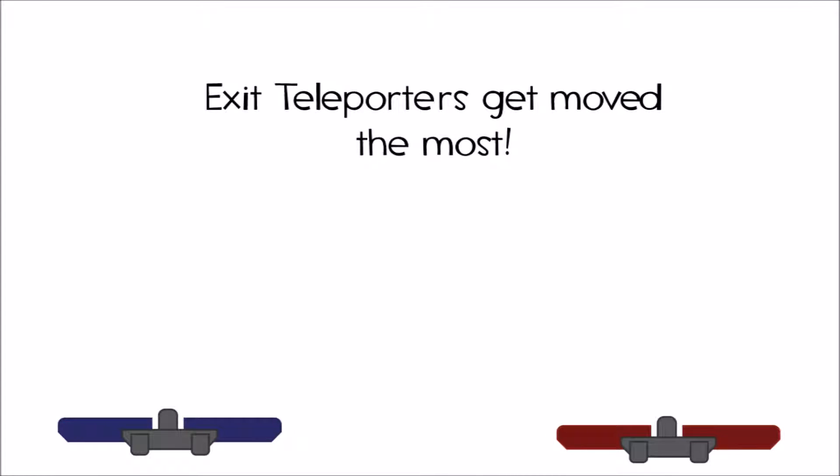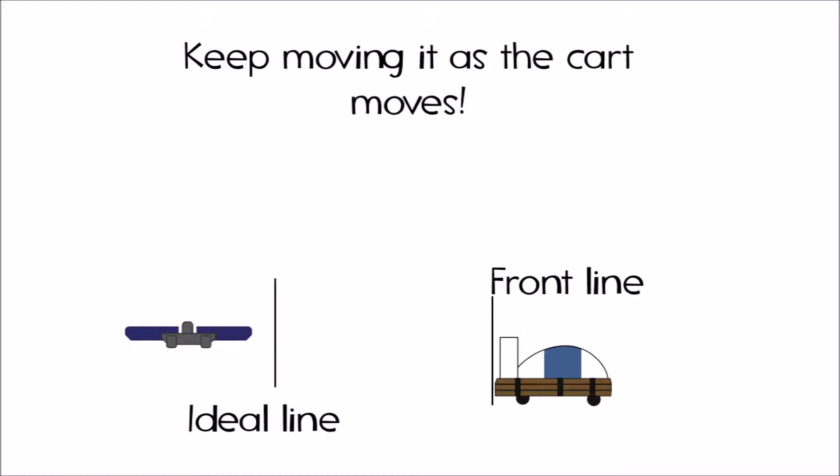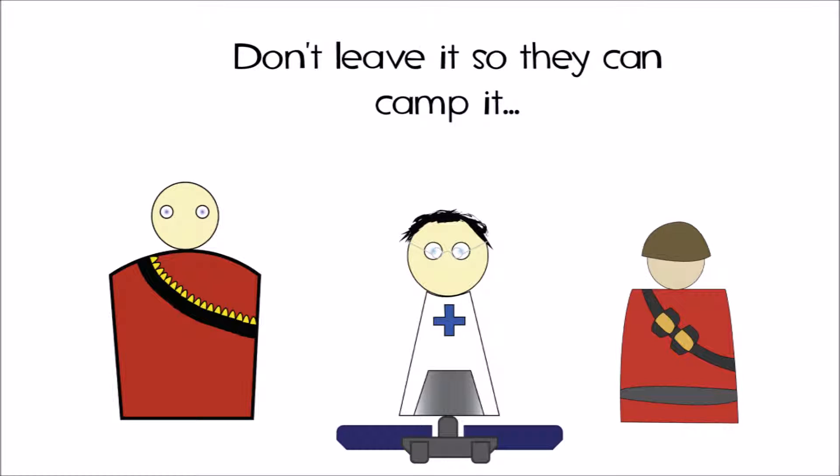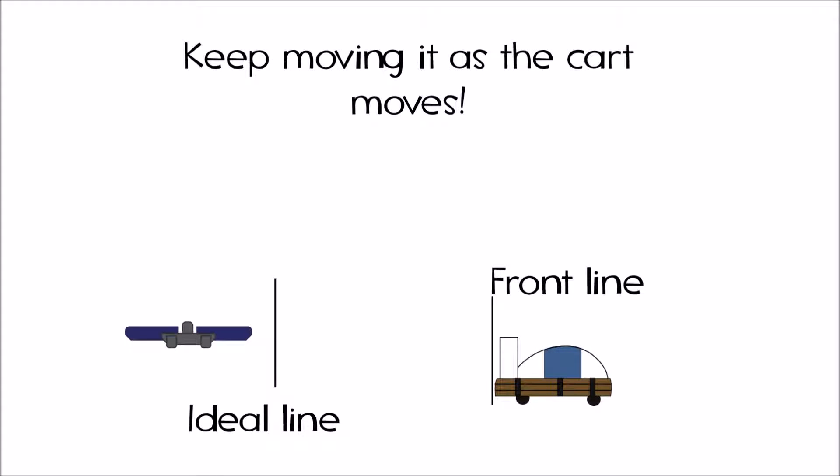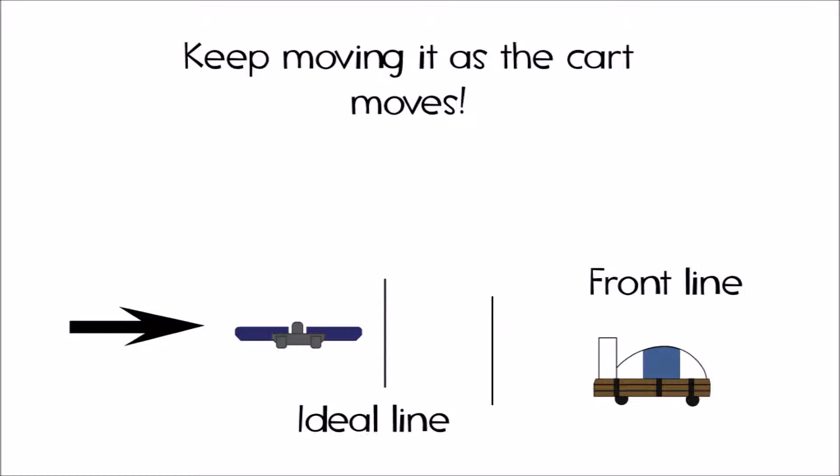For the exit, the rule changes depending on if you're attacking or defending. For attackers, you want to keep it close to just behind the front line, but not so close that they're leaving it in the middle of a firefight or in the enemy's line of sight, where those who go through get picked off instantly. Also, when attacking, you want to make sure you keep moving the exit, so that it moves with the ever-changing front line of a battle, allowing your reinforcements to keep up the pressure and prevent defenders from pushing back.